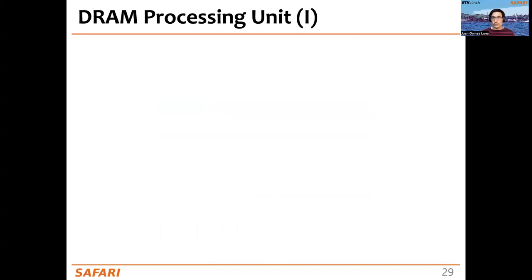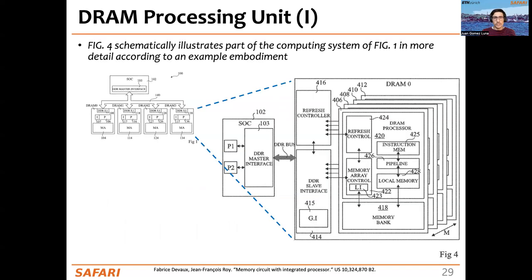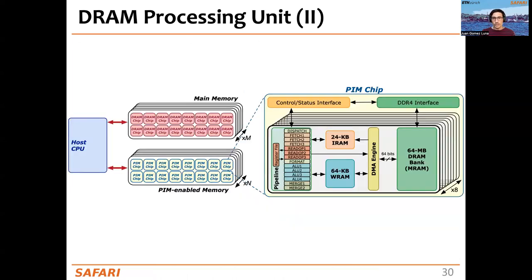Let's talk about the internals of the DRAM processing unit, or DPU. In this figure, we can see that inside each PIM chip, there are multiple memory banks colored in orange. Near each DRAM memory bank there is a small processor — the DPU. It has an instruction memory from which instructions can be fetched, a pipeline, and a small local memory for operands called WRAM.